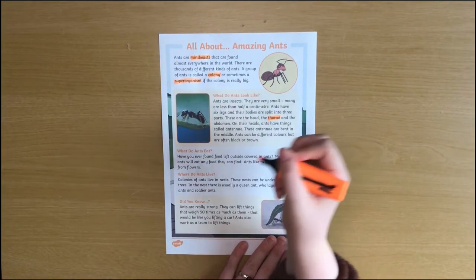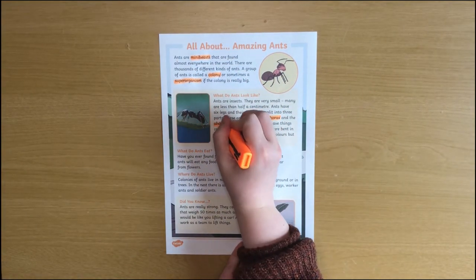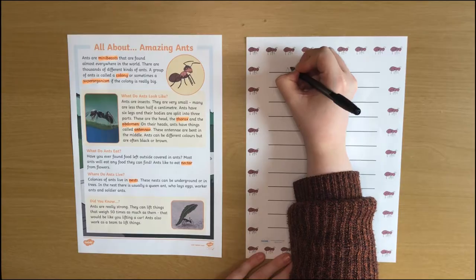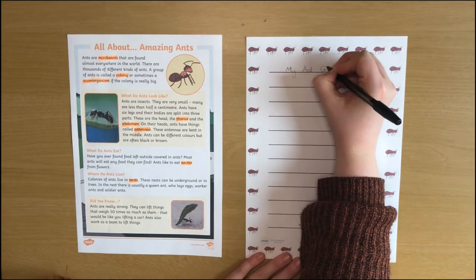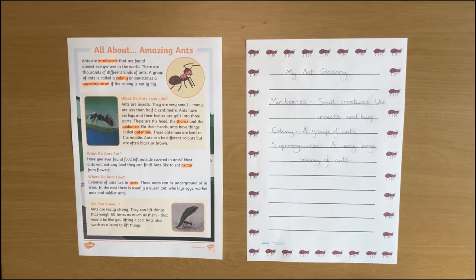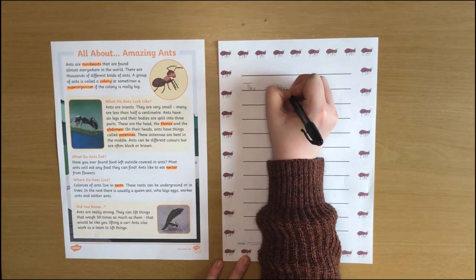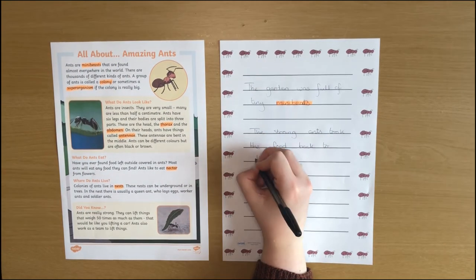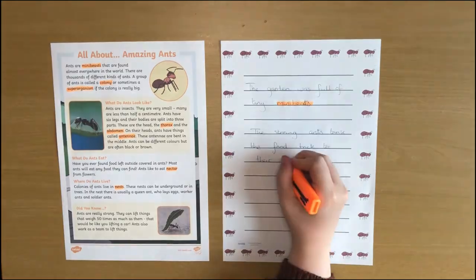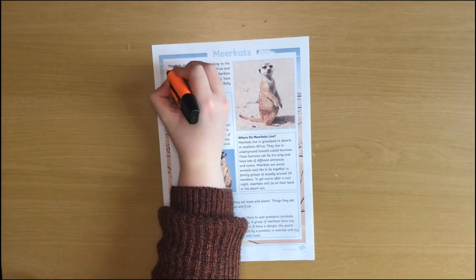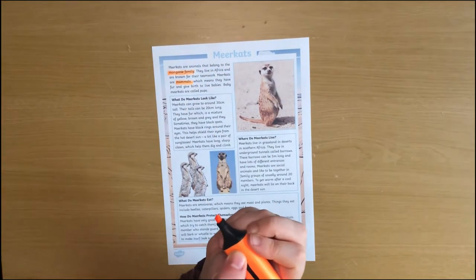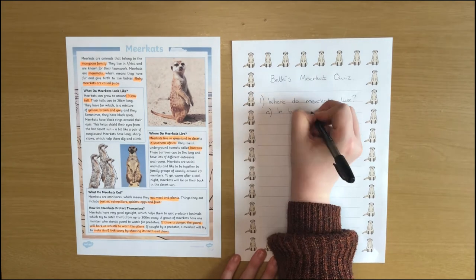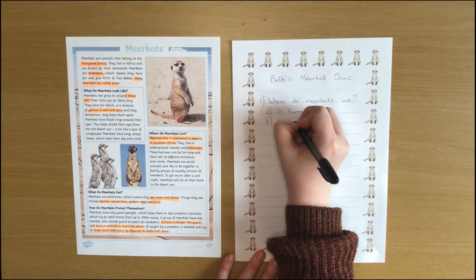Look through the text together and highlight any words that your child is unfamiliar with. Then you can create a glossary of unknown words. You could also challenge them to write sentences including the words. Children could also highlight their favourite pieces of information and turn it into a fun quiz for a friend.